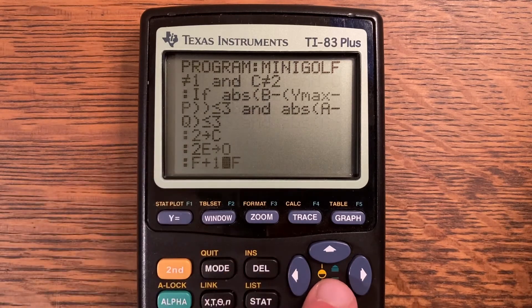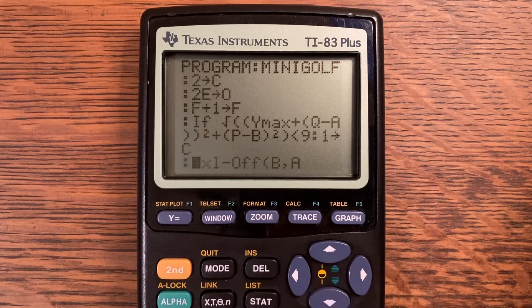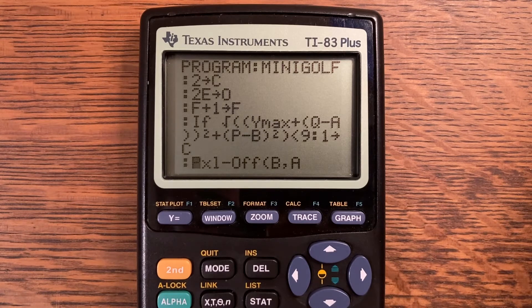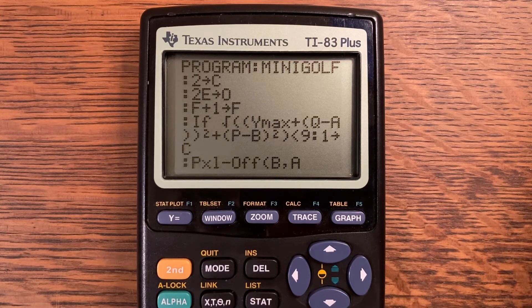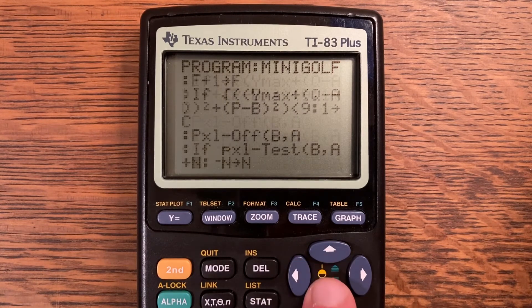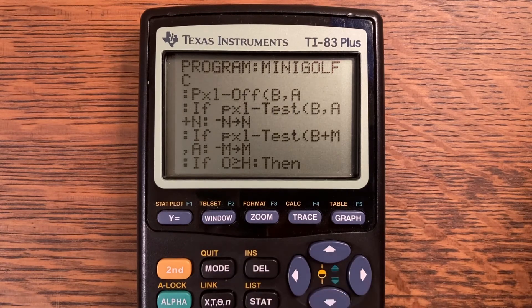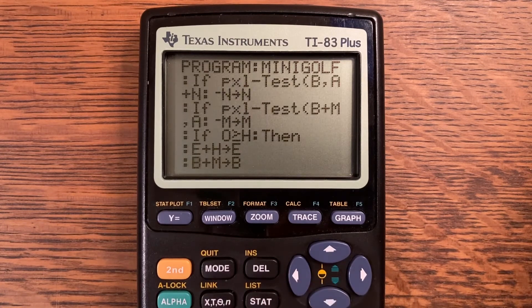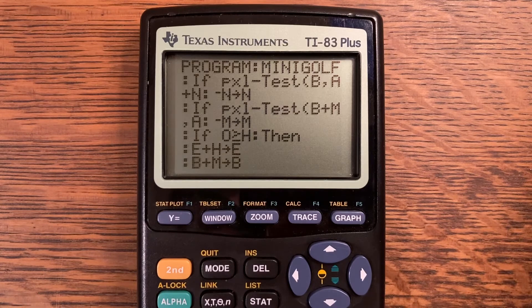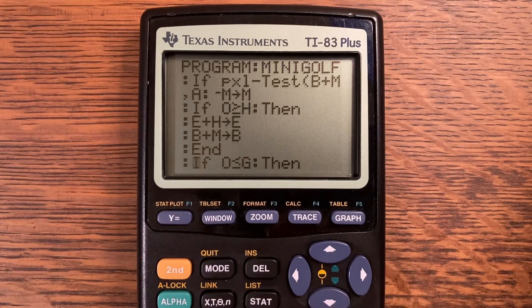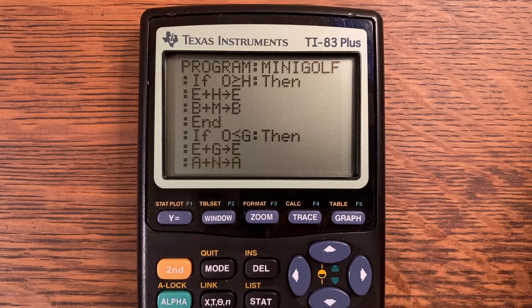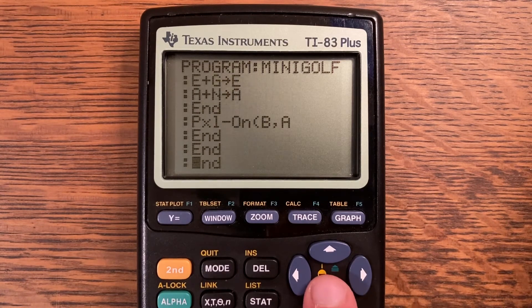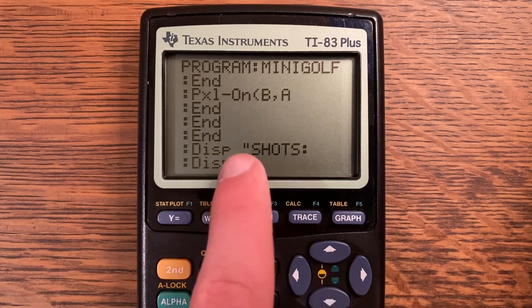Two storing to C and two E storing to O. F plus one storing to F. If the square root of Y-max plus Q minus A squared plus P minus B squared is less than 9, one storing to C. Pixel off at B comma A. If pixel test B comma A plus N, at negative N storing to N. If pixel test at B plus M comma A, then negative M storing to M. If O is greater than or equal to H, then E plus H storing to E, B plus M storing to B. And if O is less than or equal to G, then E plus G storing to E, A plus N storing to A. And pixel on at B comma A and then three ends here.